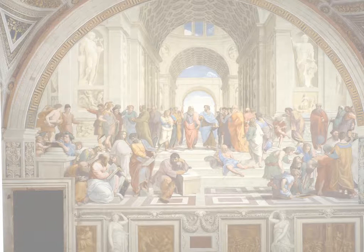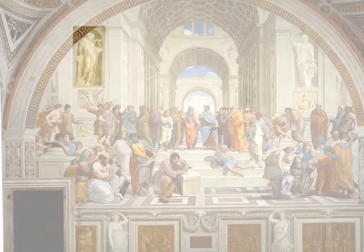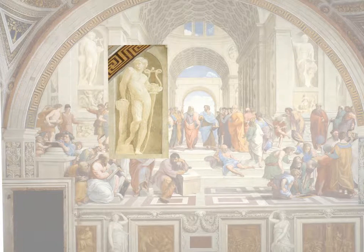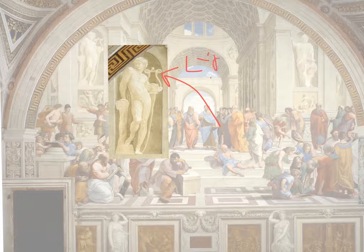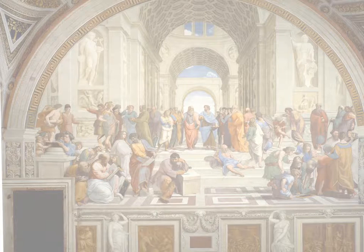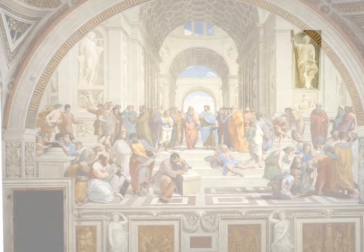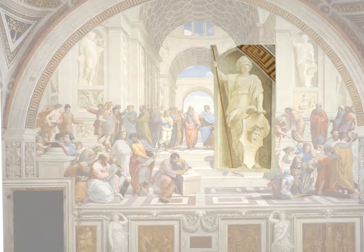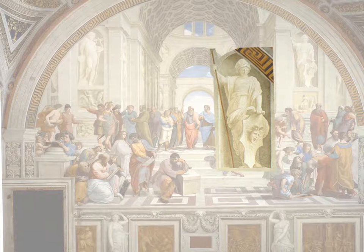On the left, or poetic side of the painting, you can see Apollo in the niche. Apollo, the son of Zeus, god of light, truth, and music, is playing the golden lyre, presiding over a representation of different philosophers. On the right, or scientific side, is Athena, the daughter of Zeus. She is the embodiment of wisdom, reason, and purity, and displays her full armor as defender of the city.